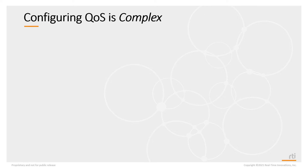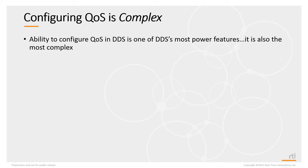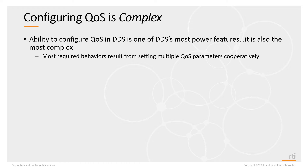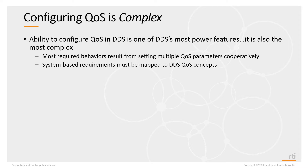Configuring QoS is complex. It's one of the most powerful features in DDS, but it's also the most difficult to learn and understand. Many behaviors will result from setting multiple QoS parameters cooperatively, so you need to set different QoS policies to certain values in order to get the desired behavior. You have to map your system requirements to DDS concepts — what you want to do, you have to mentally map to what DDS can provide you through QoS.